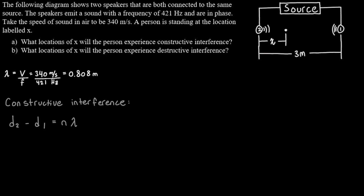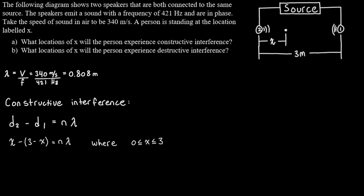Now let's bring up our equation for constructive interference: D2 minus D1 equals n times lambda. On the diagram, D2 is labeled on the left speaker and D1 on the right speaker, so D2 is just x and D1 is 3 minus x. We don't know which values of n to use yet, but we know we're looking for locations of x between the two speakers, so x should be between 0 and 3. We'll rearrange for x as a function of n and plug in values of n until we get all numbers between 0 and 3.